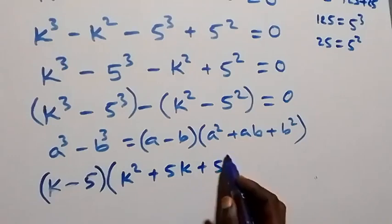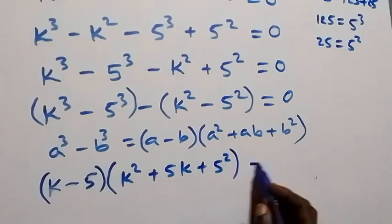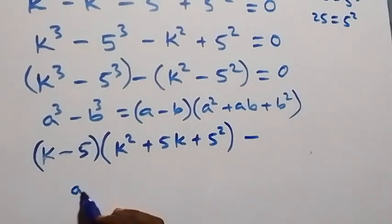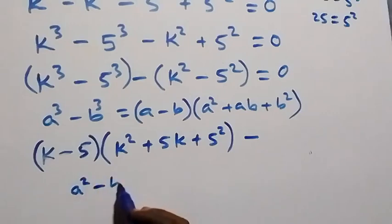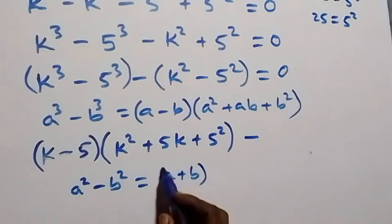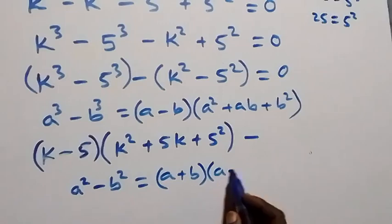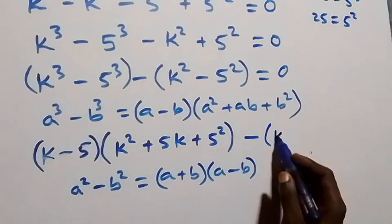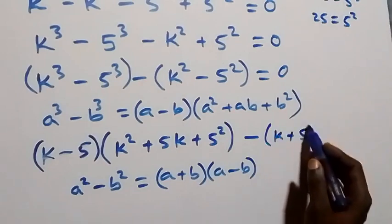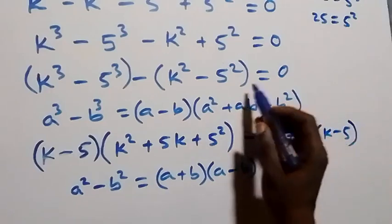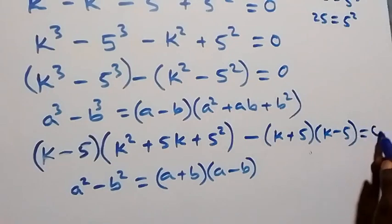Applying the difference of cubes to the first group gives k minus 5, times the bracket k squared plus 5k plus 5 squared, close bracket. Then minus, applying difference of two squares — a squared minus b squared equals a plus b times a minus b — we get k plus 5 times k minus 5, equals zero.